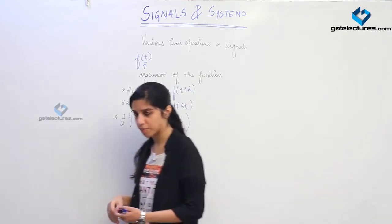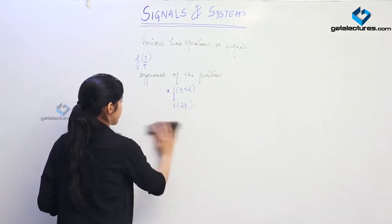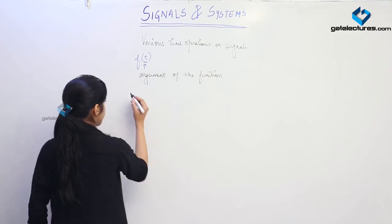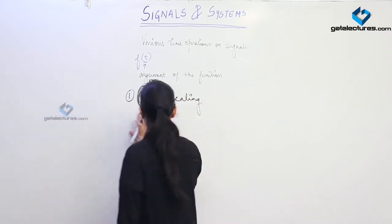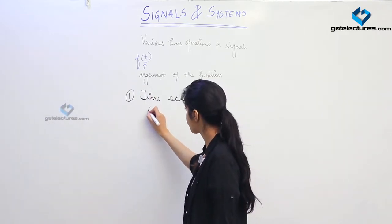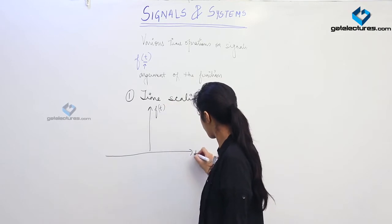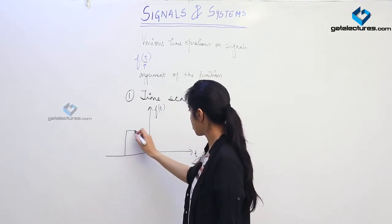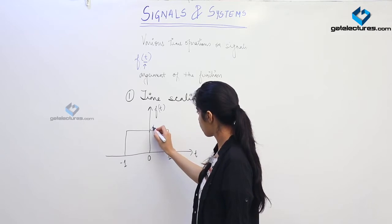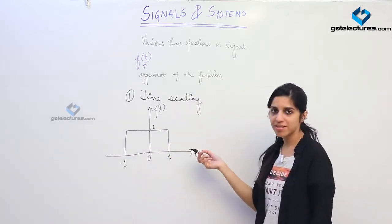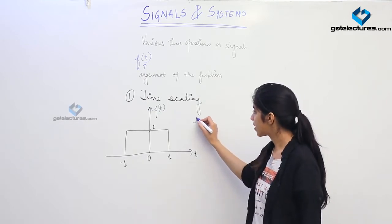Now, we are going to look at these operations one by one. The first operation we are looking at is time scaling. For explaining this I am taking the example of a rectangular pulse — a pulse which occurs between t = −1 and t = 1 and has a value of 1. This is our original function f(t). Now I am performing a time scaling operation; in time scaling we are multiplying the argument with some constant a.